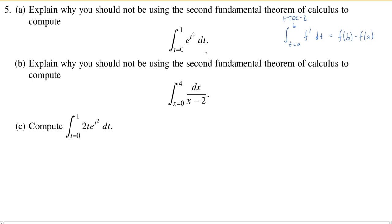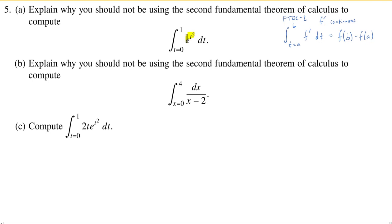Why should we not use the second fundamental theorem of calculus when computing this integral? It seems exactly when we would want to use it. There are hypotheses — you need F prime to be continuous, and you need to know how to find an antiderivative. That's the problem here, just like in problem three: e^(t²) has no elementary antiderivative, which makes it challenging to perform the step where we find an antiderivative of the integrand. Therefore, we should not be using the second fundamental theorem of calculus.